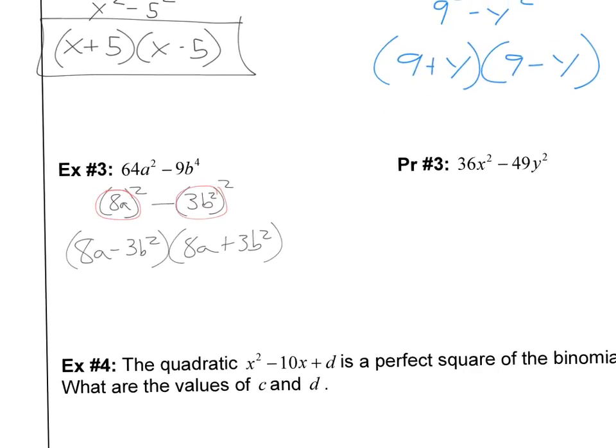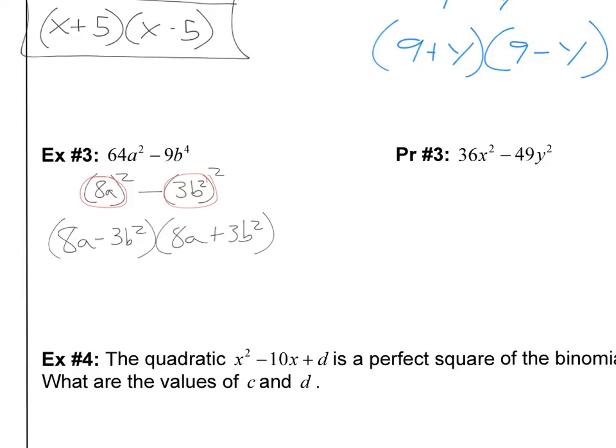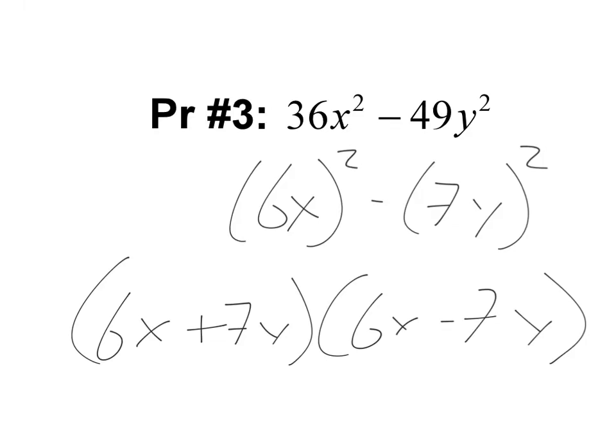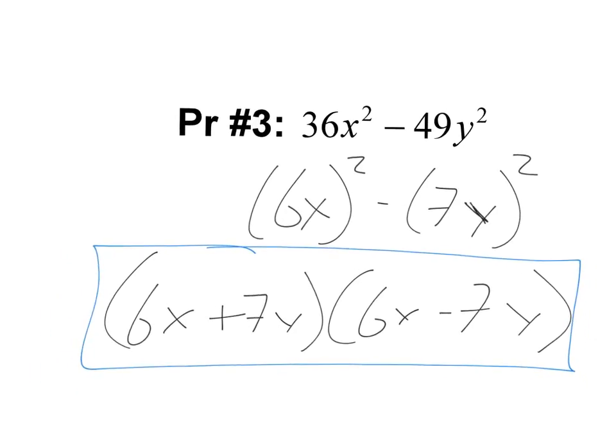All right, so I have another one kind of like that here with practice number 3. I want you guys to try it and pause the video. Okay, so I saw that 36 is a perfect square and x squared is a perfect square. So I rewrote it as (6x)². And I know that 49 is a perfect square, it's 7, and y squared is also a perfect square. So I wrote it as (7y)². So this means that I can factor this as (6x+7y)(6x-7y). Boom. That's what you should have.